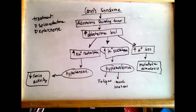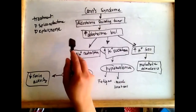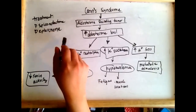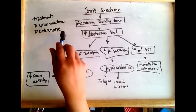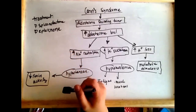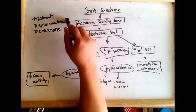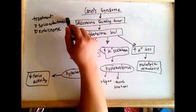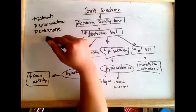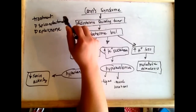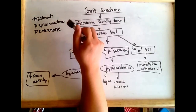The treatment for Conn's Syndrome is aldosterone blockers or antagonists, which are spironolactone or eplerenone. The side effect of these is gynecomastia. Spironolactone is more likely to cause gynecomastia, occurring in roughly 9% of cases. Eplerenone is a newer drug and causes less gynecomastia, at about 1% of cases.